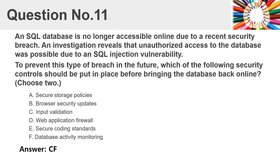Question 11: An SQL database is no longer accessible online due to a recent security breach. An investigation reveals that unauthorized access to the database was possible due to an SQL injection vulnerability. To prevent this type of breach in the future, which of the following security controls should be put in place before bringing the database back online? Choose two. Answer: C, F.